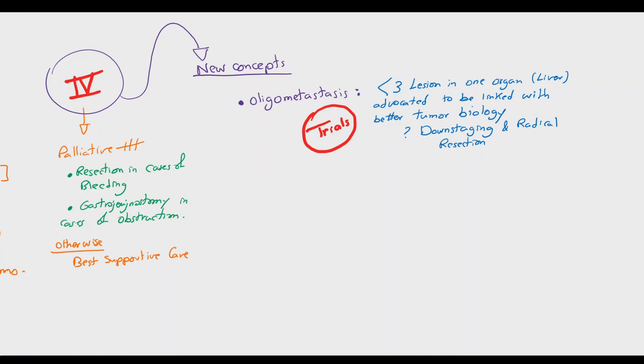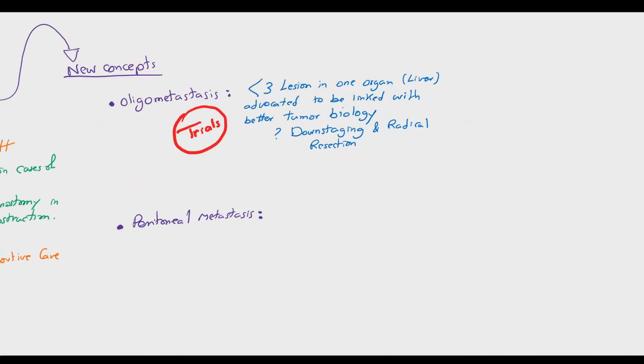The second concept is peritoneal metastasis, always considered as a sign of unresectability. When suspected in T4 classification, it should first be excluded through diagnostic laparoscopic exploration.